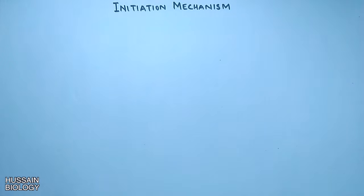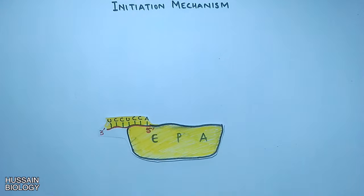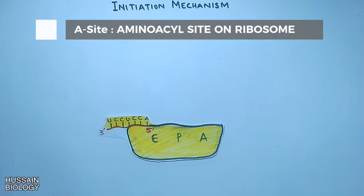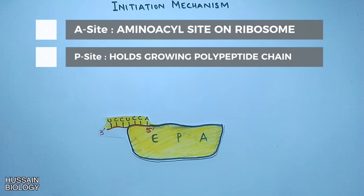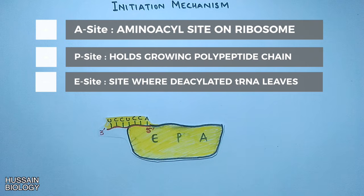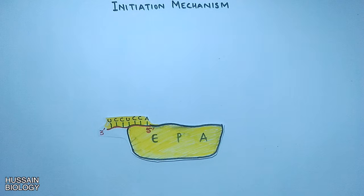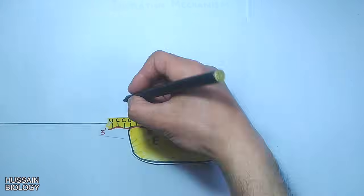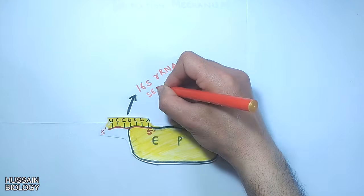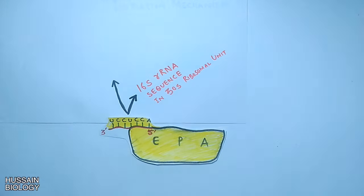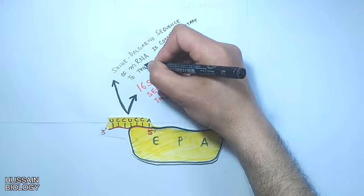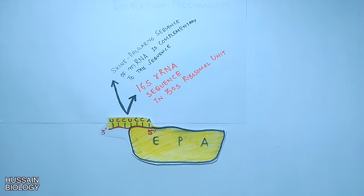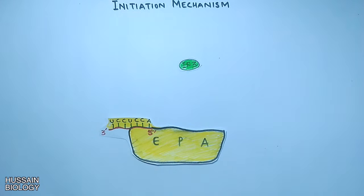Now let's get to the mechanism of initiation through diagrams. We see in this diagram the 30S subunit of the ribosome having E, P, and A sites. The A site receives the incoming aminoacyl-tRNA, the P site holds the growing polypeptide chain, and the E site is where the deacylated tRNA exits. The 30S subunit contains 16S rRNA, whose sequence is complementary to the Shine-Dalgarno sequence of mRNA.